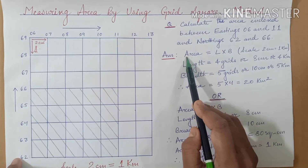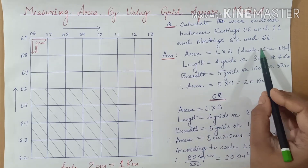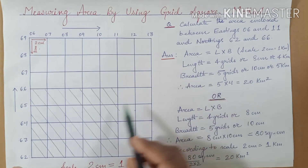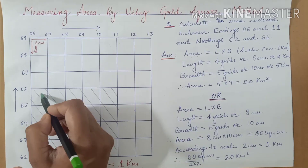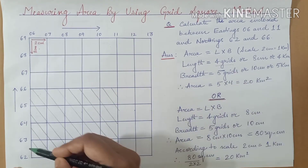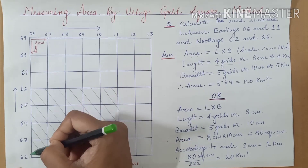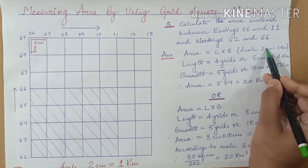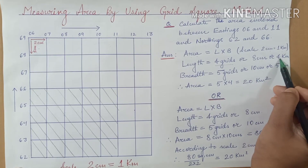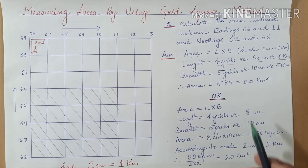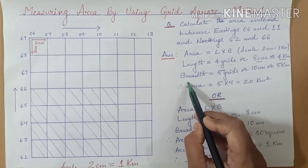Now let us see the solution. Area equals length into breadth, and the scale of the map is 2 centimeters equal to 1 kilometer. For the length, it covers 4 grids, which is 4 into 2 centimeters, equalling 8 centimeters on the map. Converting to scale, 8 centimeters equals 4 kilometers on the ground.